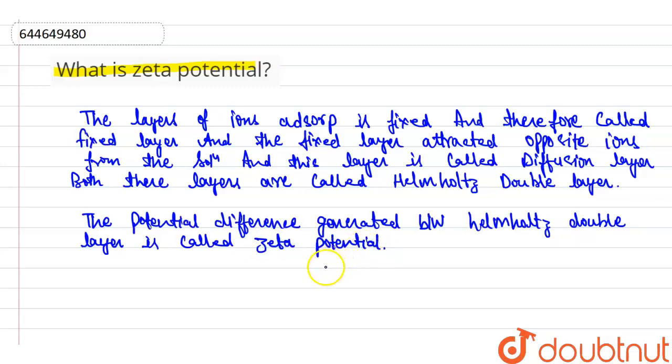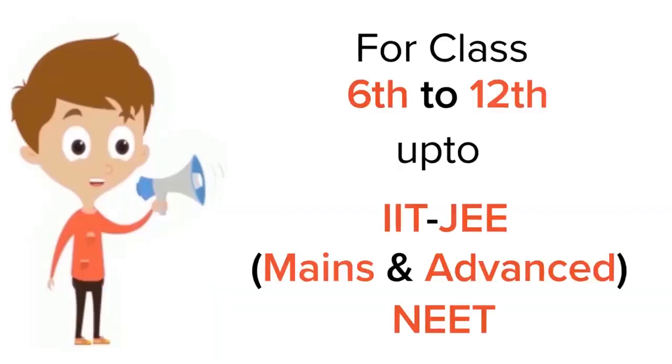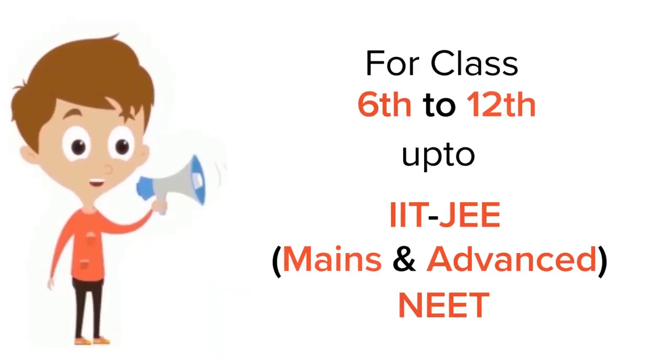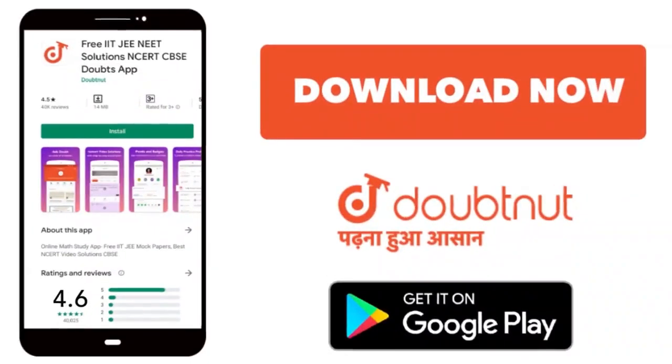So this is all about the zeta potential. Thank you. For class 6 to 12, IIT-JEE and NEET level, trusted by more than 5 crore students, download Doubtnet app today.